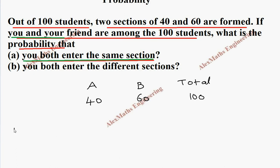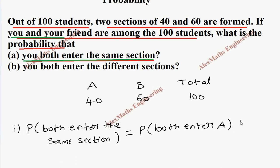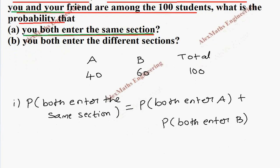In the first subdivision, the probability of both entering the same section is: P of both enter section A plus P of both enter section B.